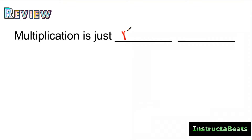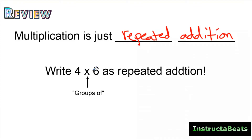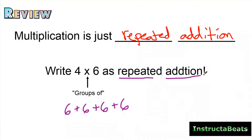Multiplication is just repeated addition. So when we see the multiplication sign, we can read that as 'groups of.' So we have four groups of six, which we could write as six plus six plus six plus six. That's what this multiplication equation written as repeated addition would be. Multiplication is repeated addition — if you know that today, that's going to be very, very helpful to you.